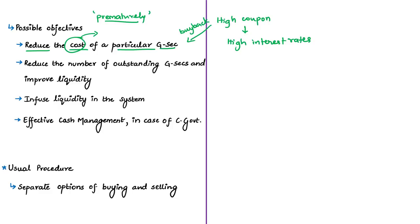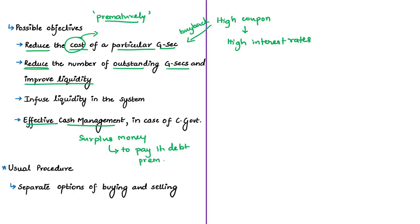By buying back high-coupon government securities, the government manages its borrowing costs and eliminates future interest obligations. The next objective of buyback is to reduce the number of outstanding securities and improve liquidity in the government securities market. The central government also repurchases government securities for effective cash management — when it has surplus money, it can utilize that surplus to buy back securities, meaning it has money to pay its debt. Another reason is to infuse or inject liquidity into the economic system.